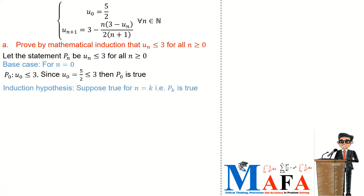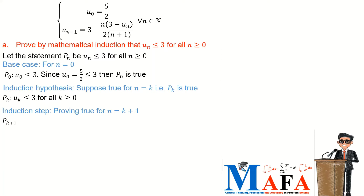Therefore statement P(0) is true. Now we introduce our induction hypothesis, where we suppose that the statement is true for n equal to k — so P(k) is true. We then use this induction hypothesis to prove that it is true for n equal to k plus 1, which we refer to as the induction step. We are supposed to prove that u_{k+1} is less than or equal to 3.